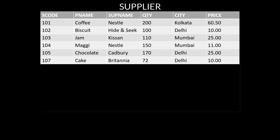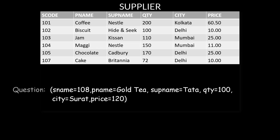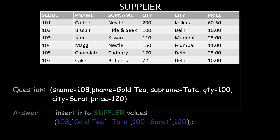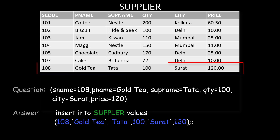Let's look at examples. Suppose you want to add a record with specific values. The answer is: INSERT INTO supplier VALUES (...), and the table will be updated with those values.